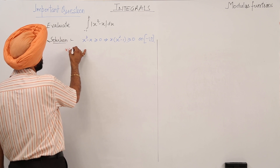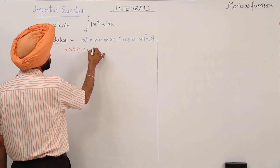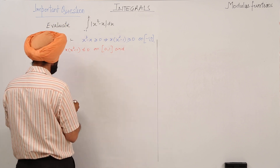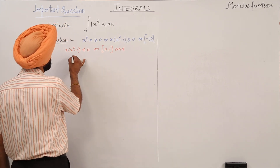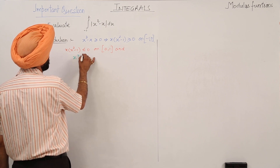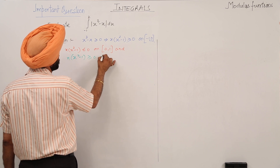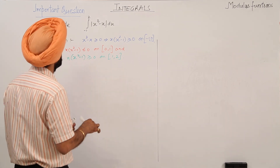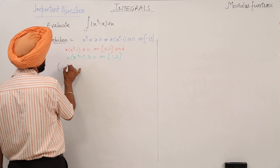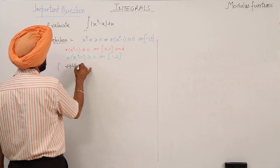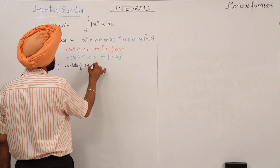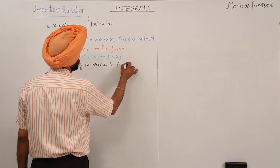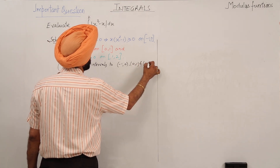Then x(x² - 1) ≤ 0 on (0, 1), and x(x² - 1) ≥ 0 on (1, 2). We split into intervals: (-1, 0), (0, 1), and (1, 2).